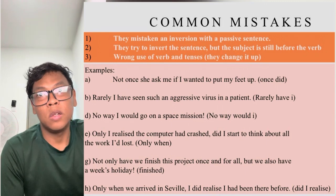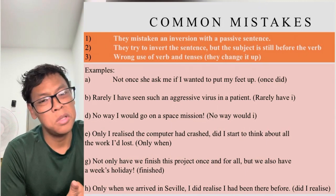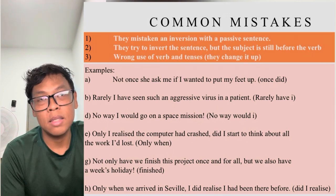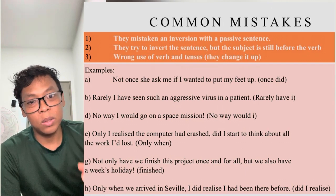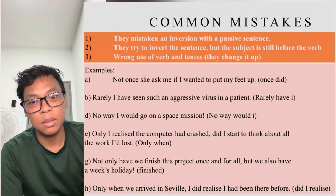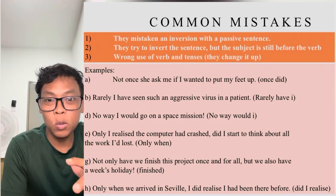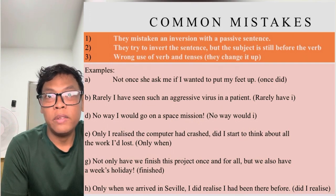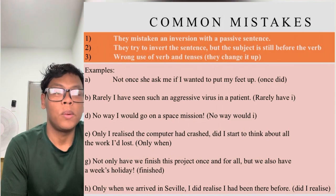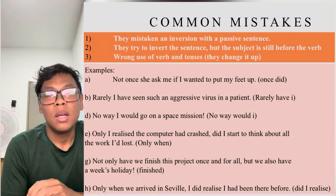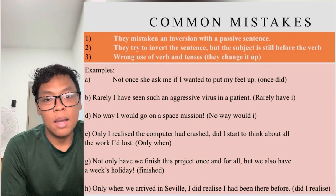Now let's go through some common mistakes people make when inverting sentences. First, beginners often confuse inversion with a passive sentence. Second, they try to invert the sentence but leave the subject still before the verb — that's wrong. Third, they use the wrong words and tenses, changing the sentence incorrectly rather than just inverting it. For example, the mistake 'Not once she asked me if I wanted to put my feet up' — the correct form is 'Not once did she ask me if I wanted to put my feet up,' using past tense.